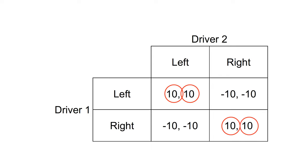We can see from the matrix that there are two Nash equilibria. The Nash equilibria are left-left and right-right. If both drivers are driving on the left, neither has an incentive to change their strategy. If both drivers are driving on the right, again, neither has an incentive to change.